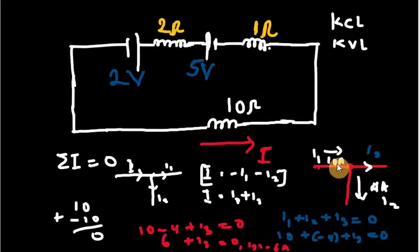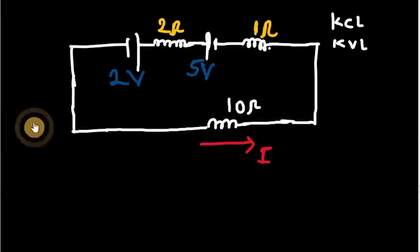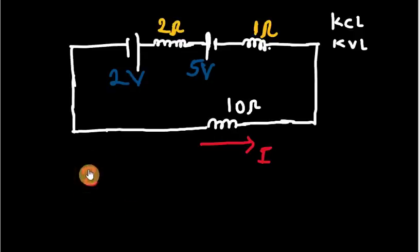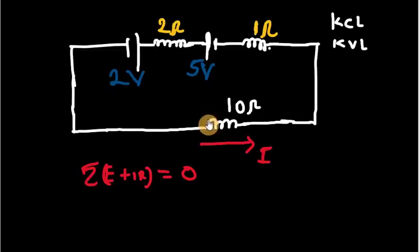In this circuit before us, we don't have a place where three or more wires meet, so we can resolve this problem using Kirchhoff's voltage law. Kirchhoff's voltage law, which is based on the conservation of energy, states that the sum of the EMF and the potential drop across the circuit elements in the circuit should equal zero.